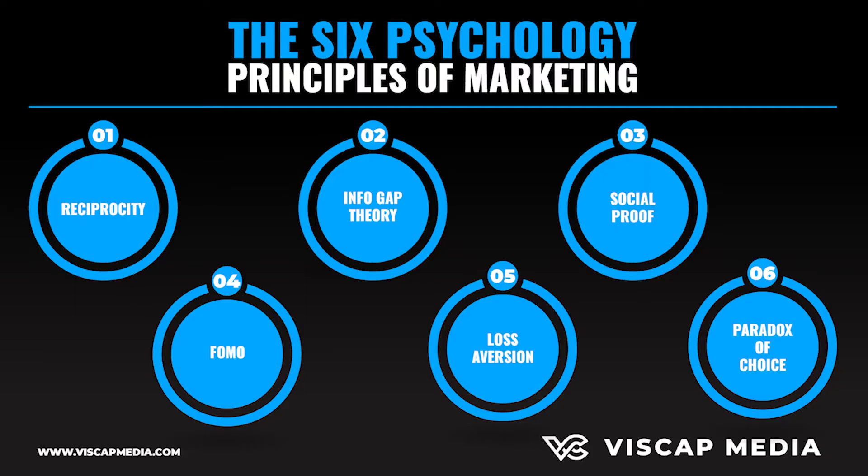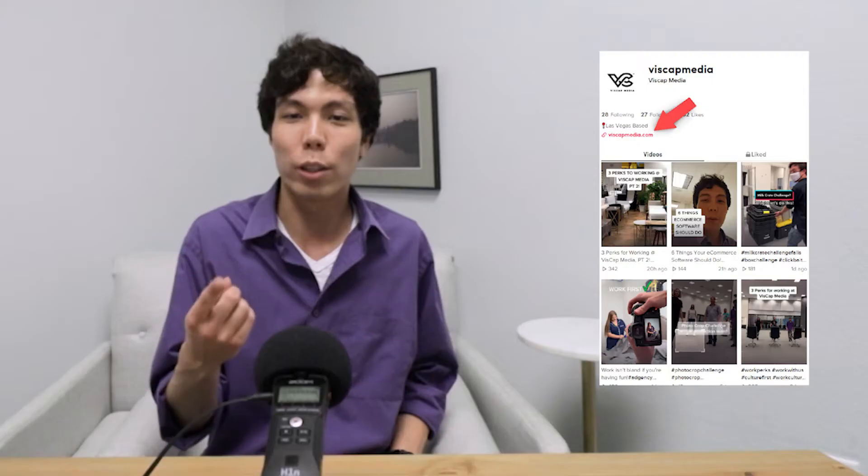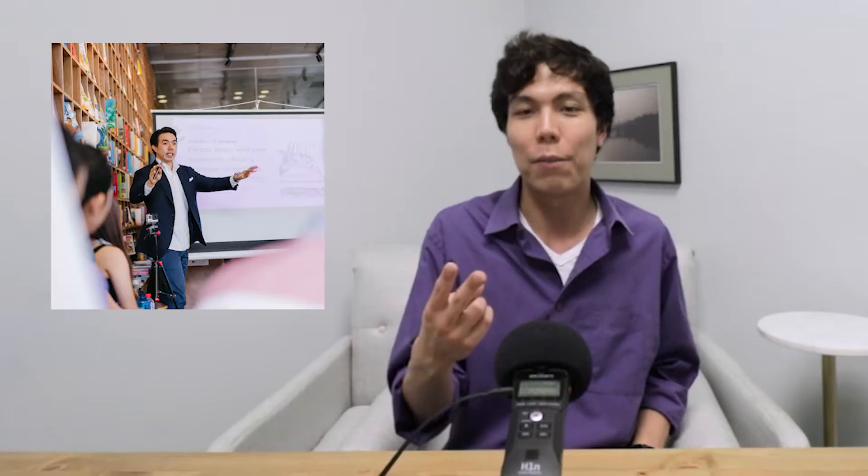To make a long story short, the six psychology principles of marketing work well on advertising on TikTok. The six psychology principles include reciprocity, infogap, social proof, FOMO, loss aversion, and the paradox of choice.